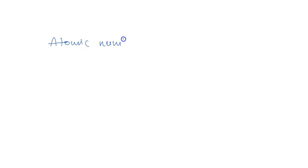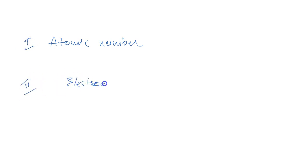Whenever you have to find the position of an element in the modern periodic table, there are two things you need to know. First is the atomic number of that particular element, and second, you should be able to write the electronic configuration from that atomic number. Only when you can do these two things will you be able to identify the position.